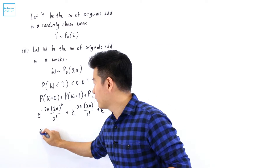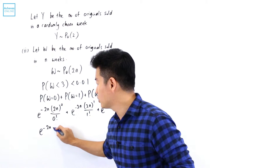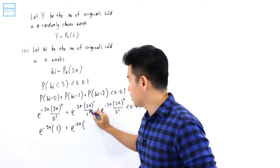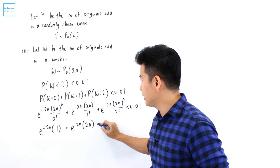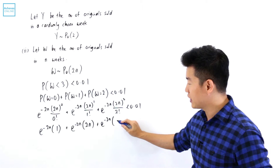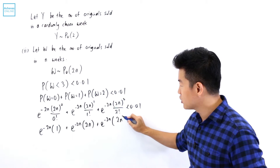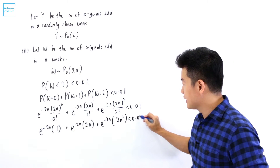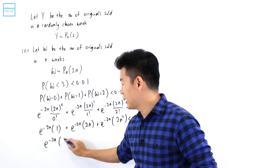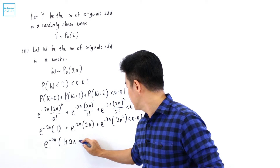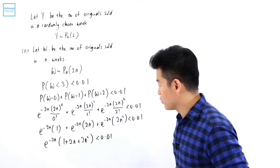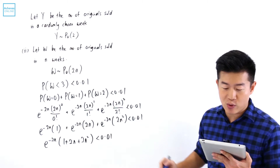Simplifying each term: e^(−2N) times 1, plus e^(−2N) times 2N, plus e^(−2N) times 4N² divided by 2, which is 2N². Factoring out e^(−2N), we get e^(−2N)(1 + 2N + 2N²) < 0.01. This is the inequality the question is asking for.